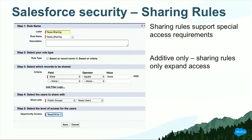This rule is called Texas Sharing. What this rule does is enable any user who's in a group called Texas Users to have access to any account where the state in the address field is Texas. Regardless of ownership of that account, anyone in the Texas Users group would be able to have access to this account. Sharing rules let you shape access, and sharing rules are kind of like permission sets in that they are always additive — they always let you expand access.